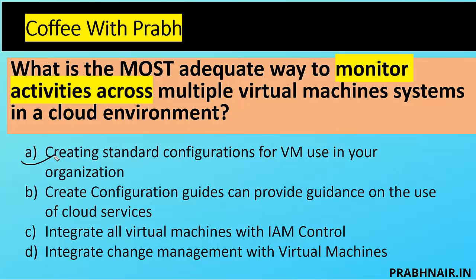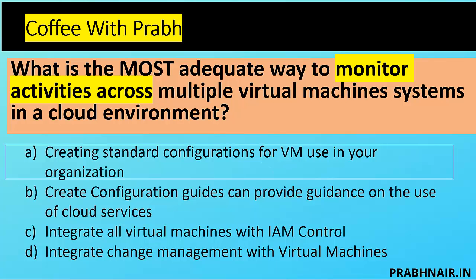The reason is simple: if you create a standard configuration for VM use in your organization, it provides uniformity. Multiple configurations create variations that add complexity and make monitoring for unauthorized use more difficult. If an organization uses a standard pattern, it is much simpler to identify malicious behavior and enforce configuration policies. Without standard configurations, it is also difficult to integrate IAM and change management — so C and D are essentially part of A.